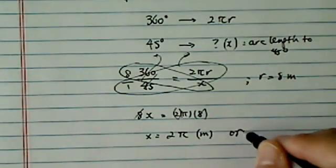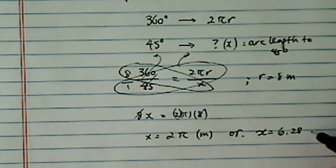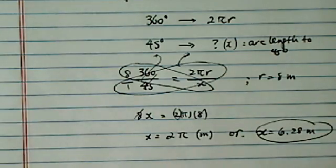Or if you want it, since pi is 3.014, so it's 6.28 meters. All right. That's it.